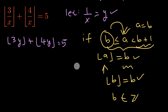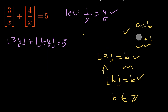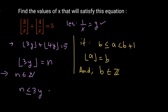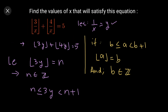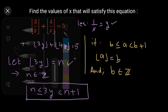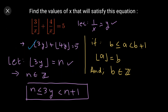Now let us use this information to solve our equation. I am going to take the floor value of 3y as some integer n. If floor(3y) = n, then by definition, 3y must be greater than or equal to n and smaller than n+1. So the floor value of 3y equals n only if 3y lies in the interval [n, n+1).